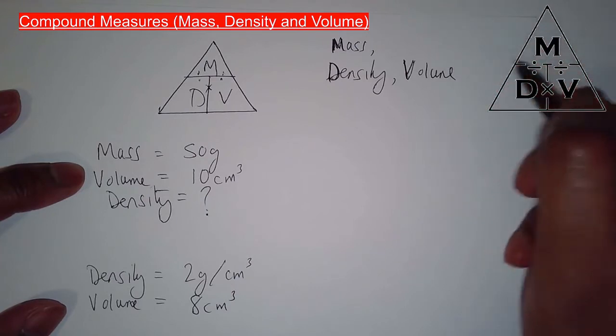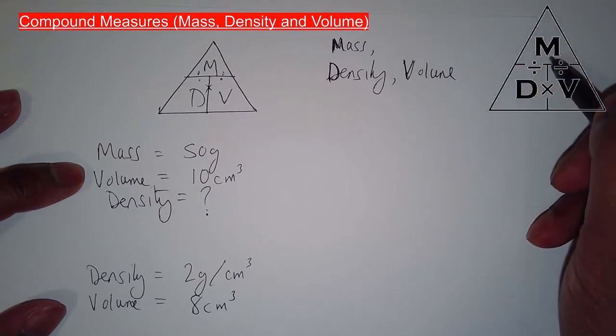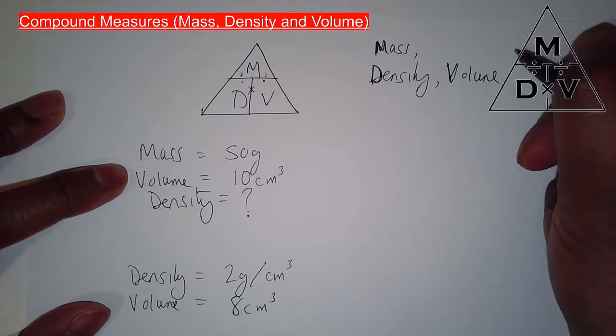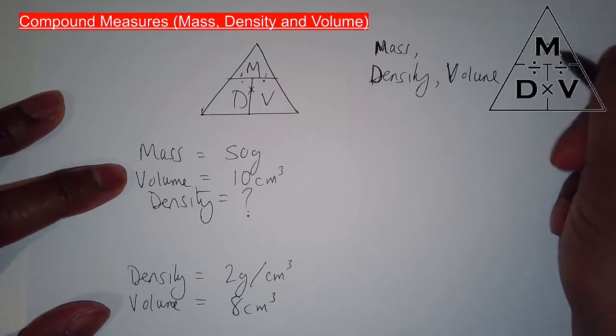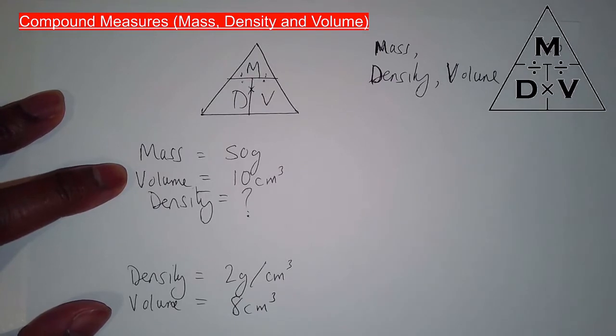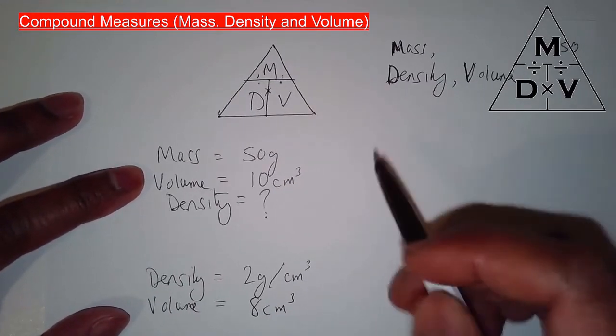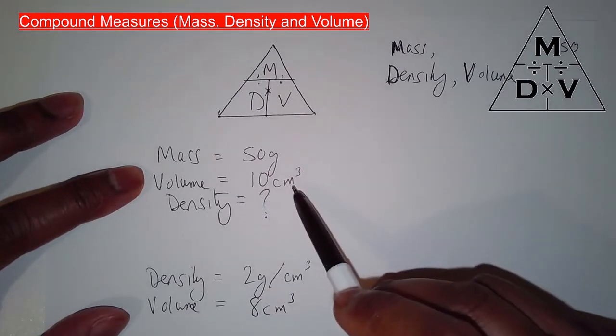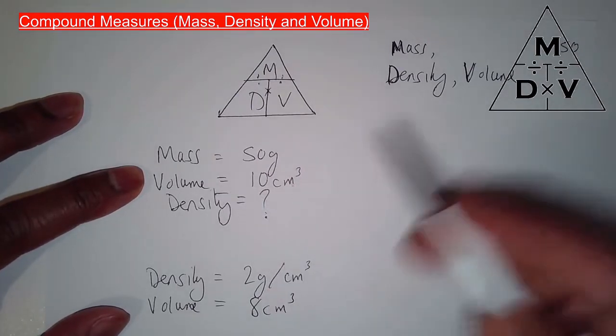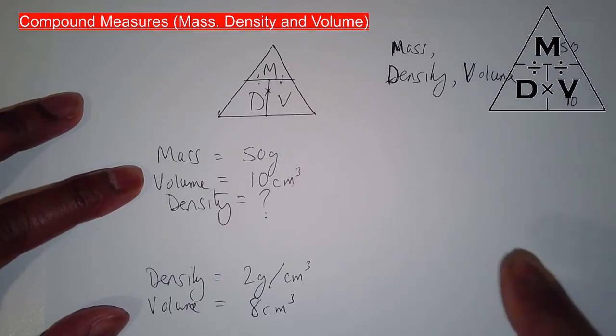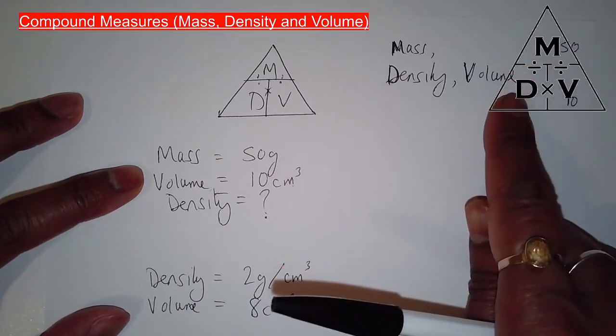So what you then do, if you look over here, mass is 50 grams, so I'll write 50 here, 50 grams. Let's see now, volume, volume is 10, so now we need to work out this density here.